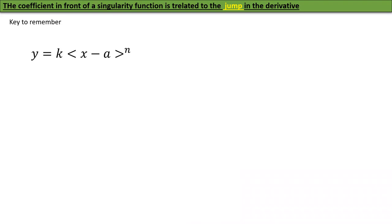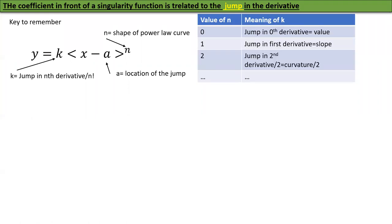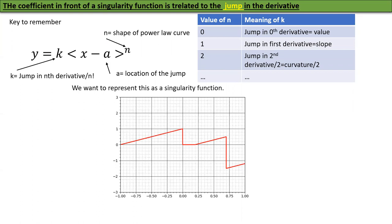Here is the key rule: the coefficient in front of a singularity function is related to the jump in the corresponding derivative. Specifically, for y = k·⟨x−a⟩^n, k equals the jump in the nth derivative divided by n factorial. Here, n is the power (the shape of the power law) and a is the location of the jump. If n=0, it's a jump in value. If n=1, it's a jump in slope (first derivative). If n=2, it's a jump in the second derivative divided by 2. Remember that n factorial term.